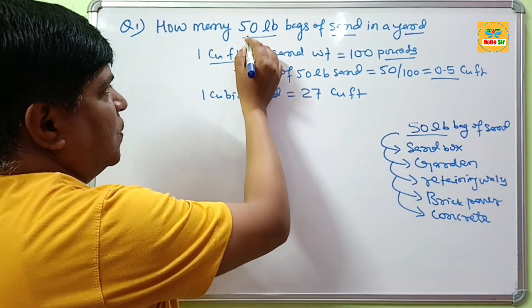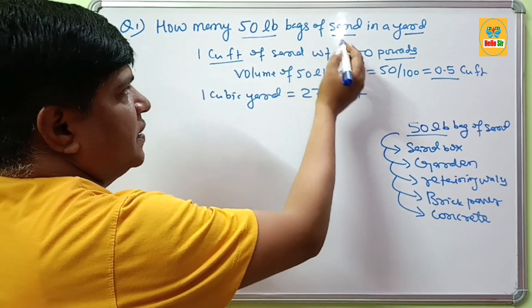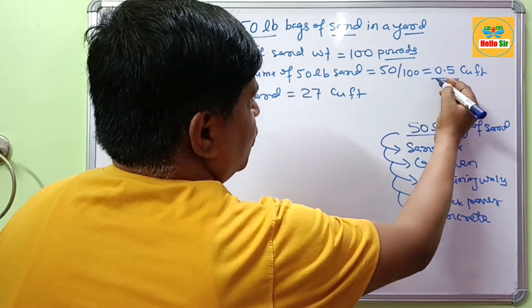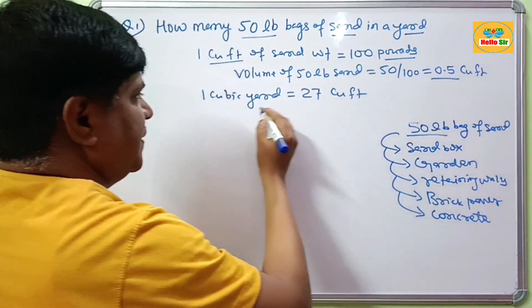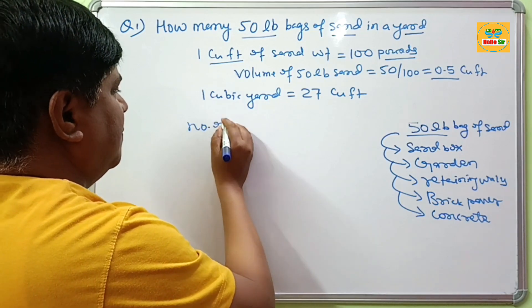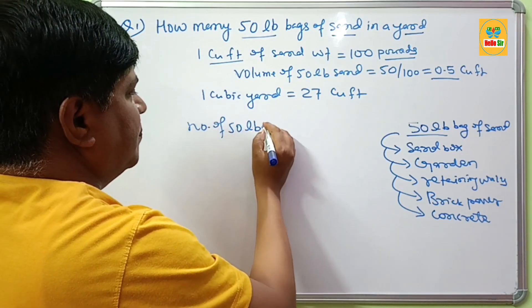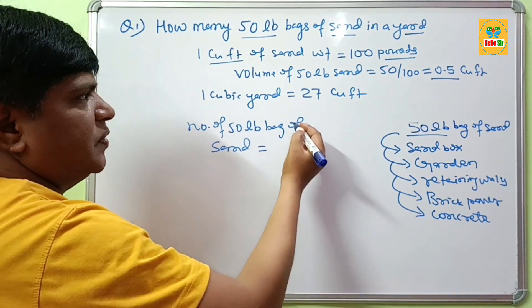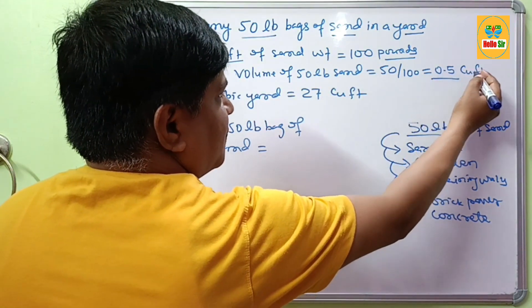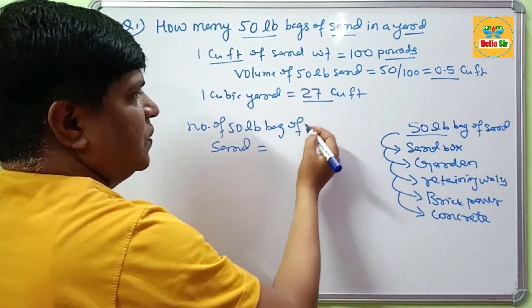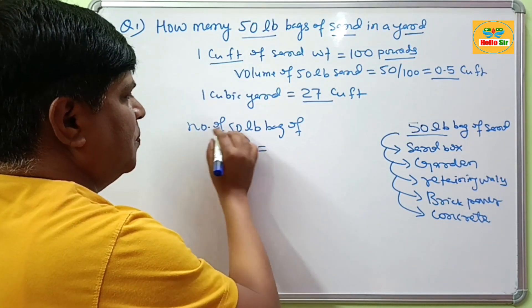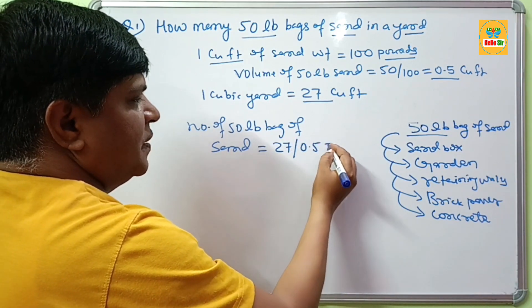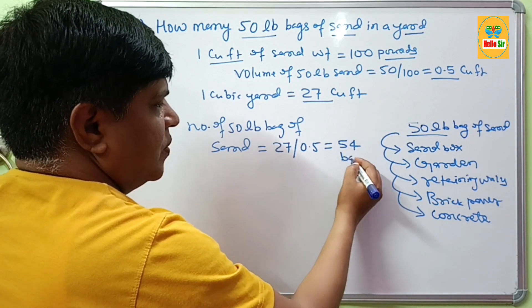To calculate the total number of 50 lb bags of sand in 1 cubic yard, since each 50 lb bag equals 0.5 cubic feet and 1 cubic yard equals 27 cubic feet, you divide 27 by 0.5, which gives you 54 bags.